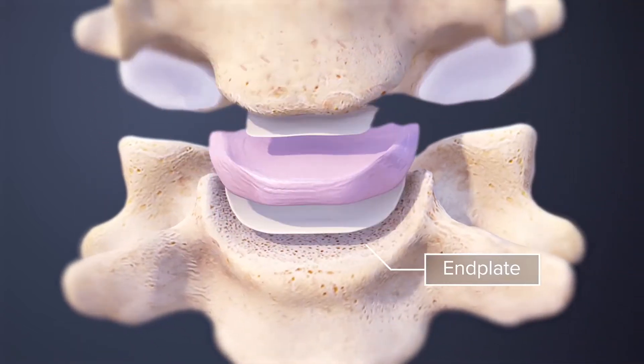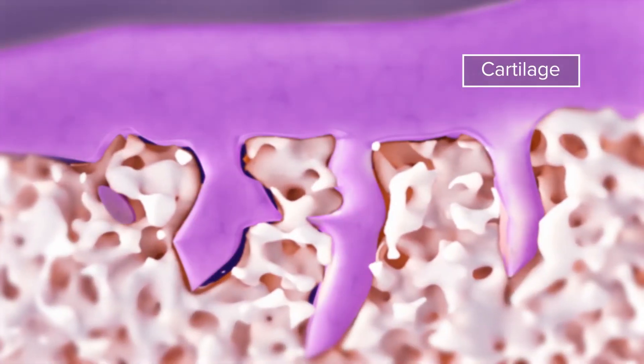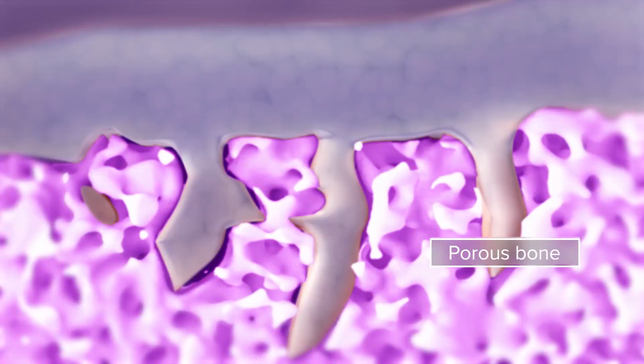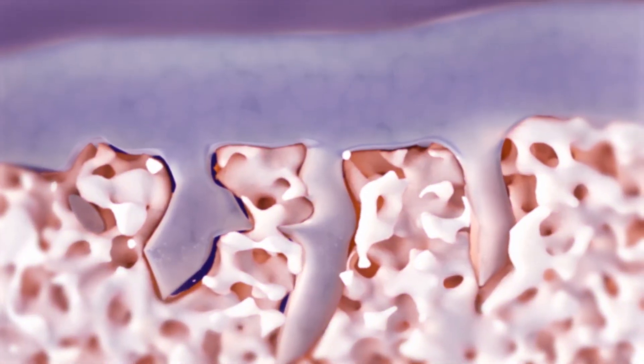A vertebral endplate is the transition region between the disc and the vertebrae. It has a thin layer of cartilage attached to porous bone. The endplate allows for nutrients to pass into the disc.